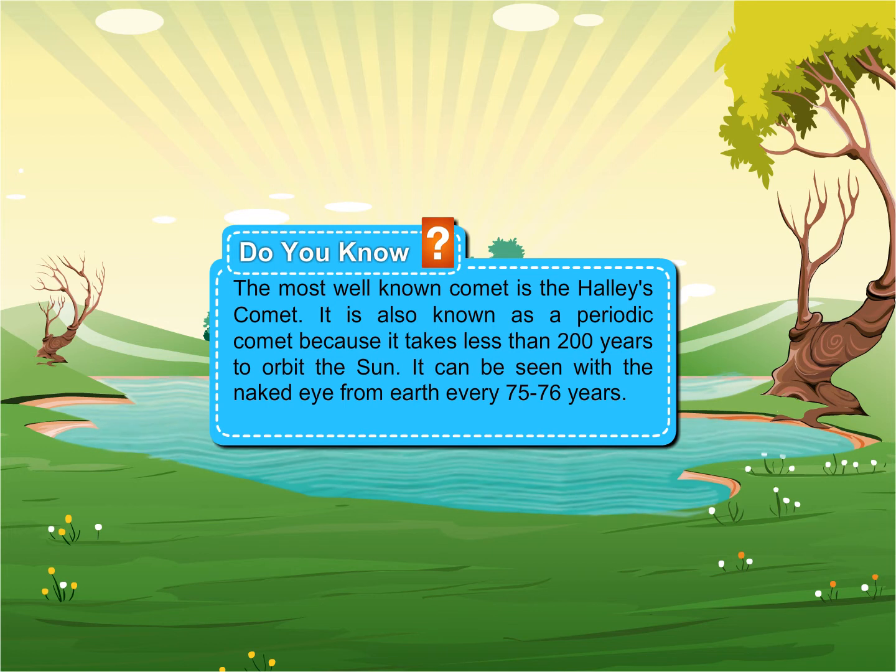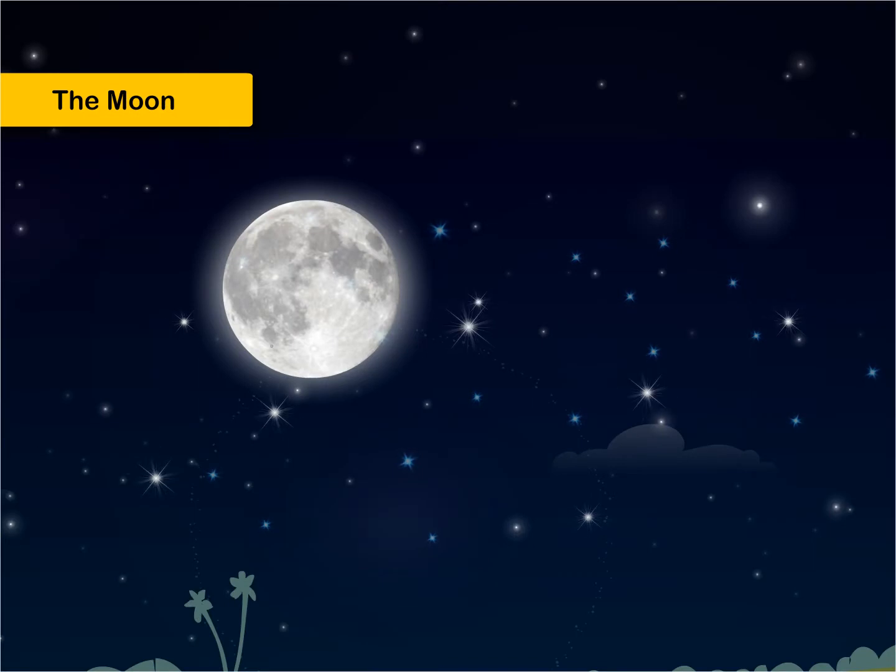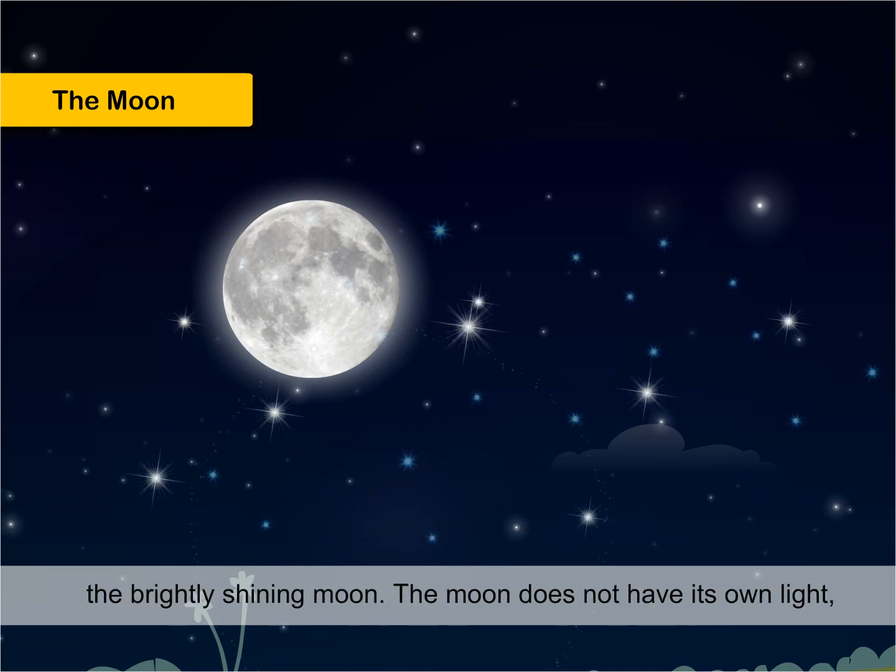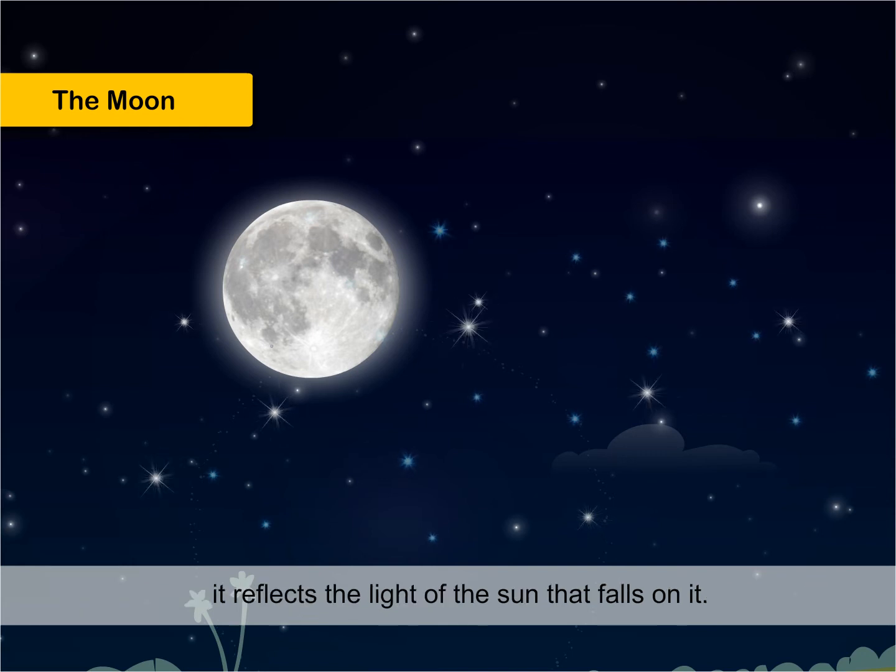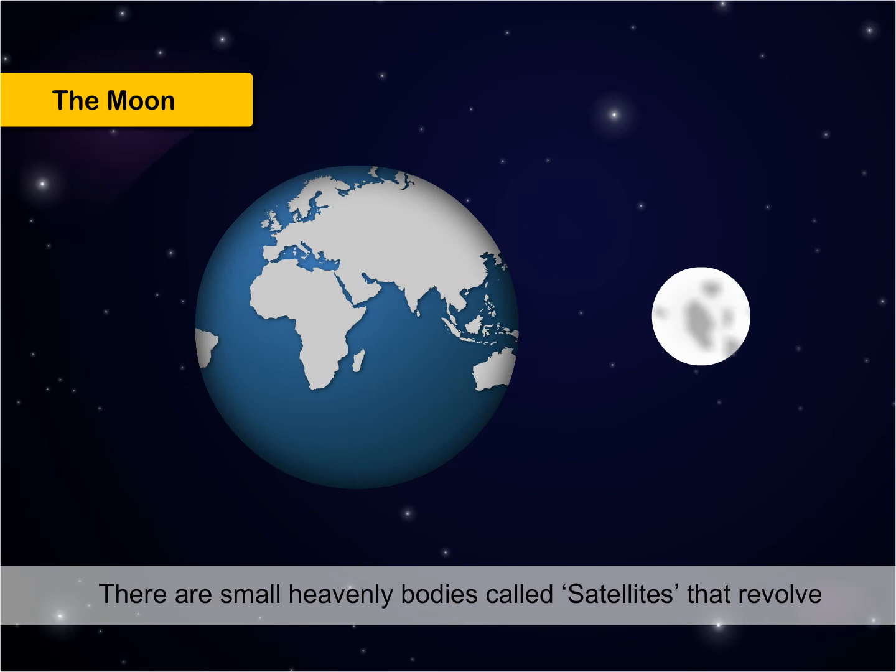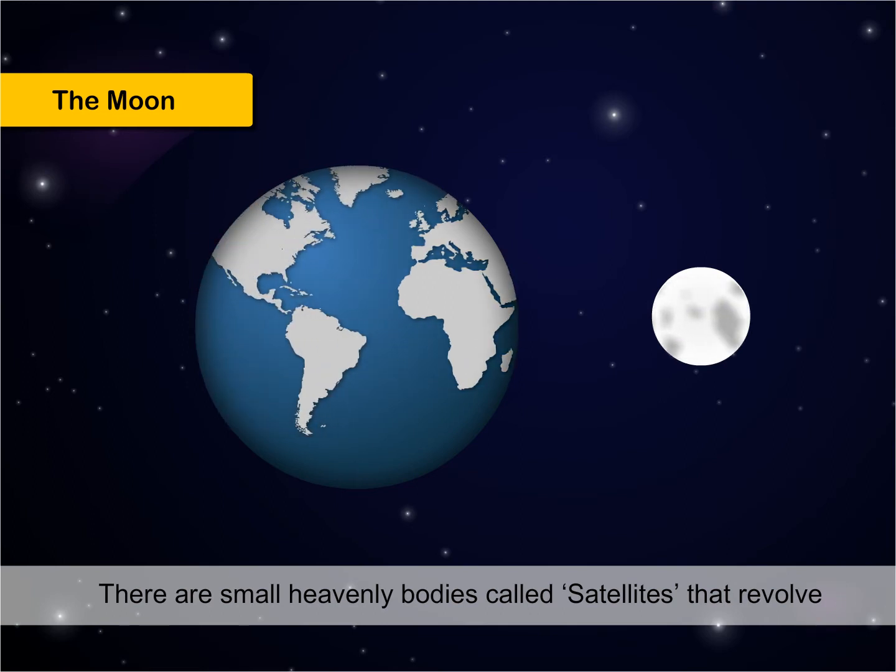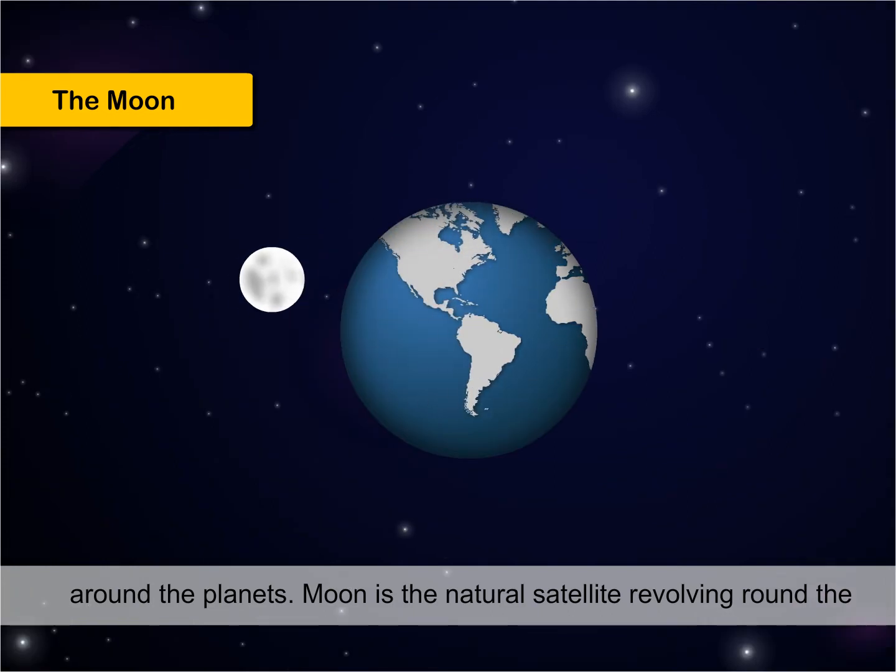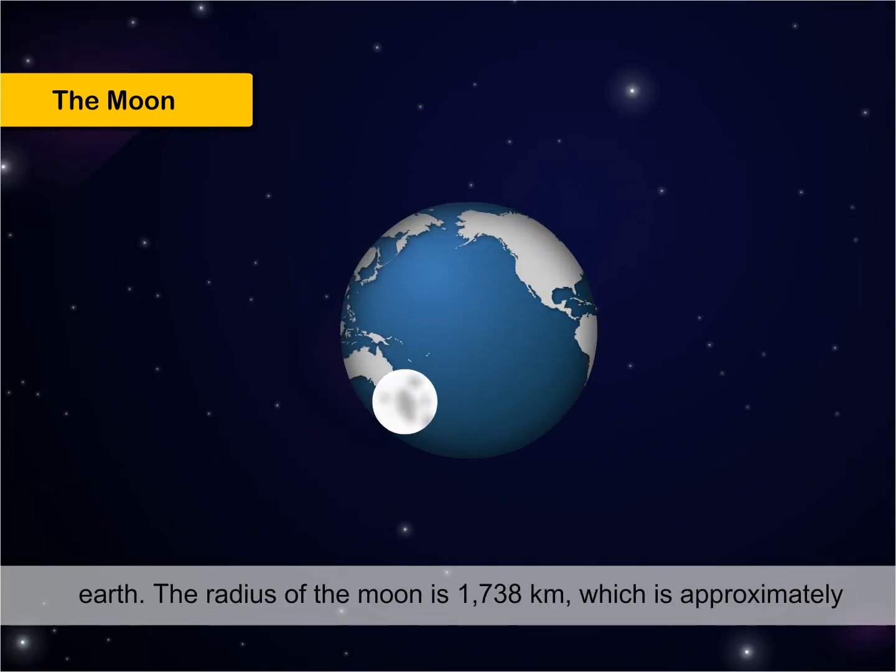The Moon. Look at the clear sky at night. You can see the twinkling stars and the brightly shining moon. The moon does not have its own light. It reflects the light of the sun that falls on it. There are small heavenly bodies called satellites that revolve around the planets. Moon is the natural satellite revolving around the Earth.